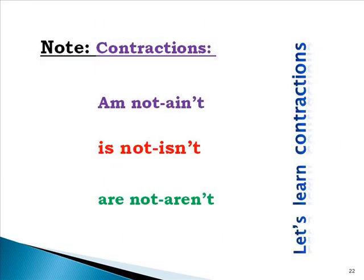Now let's learn contractions, which native English speakers use very frequently. 'Am not' → 'ain't'. 'Is not' → 'isn't'. 'Are not' → 'aren't'. Some letters are omitted — for example in 'ain't', the 'm' is omitted and 'i' is used in its place. The letter 'o' is omitted and replaced with an apostrophe. In 'isn't', the 'o' is omitted and an apostrophe is used instead. The apostrophe indicates that a letter has been omitted. So: am not → ain't, is not → isn't, are not → aren't.